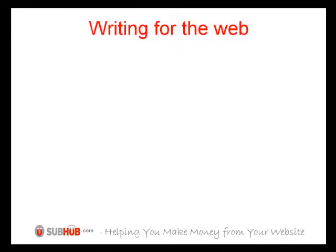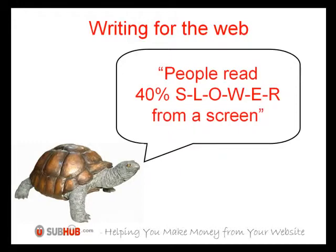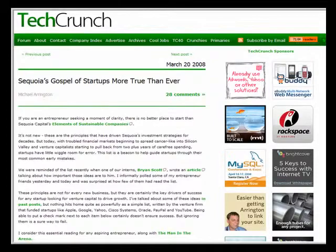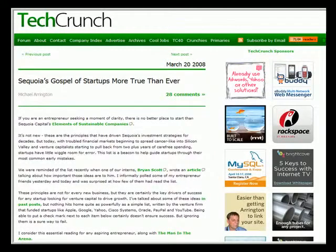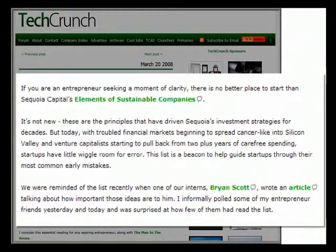Moving on to writing for the web — you must remember that people read 40% slower from a screen than from paper, so you have to adapt the way you write. Ensure there is lots of white space and always use dark text on a white background to maximise contrast, which hugely improves readability. Write short sentences and short paragraphs.